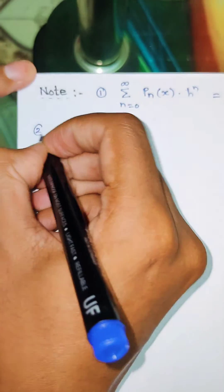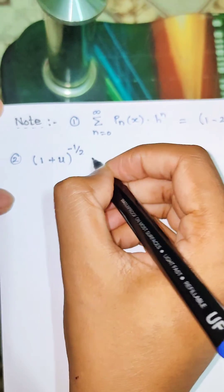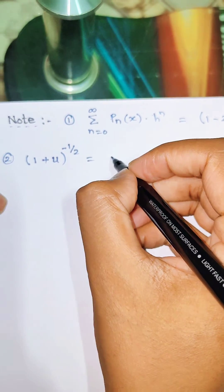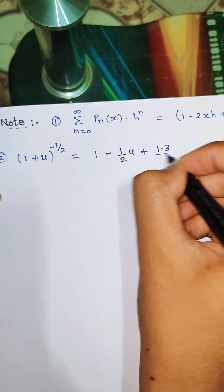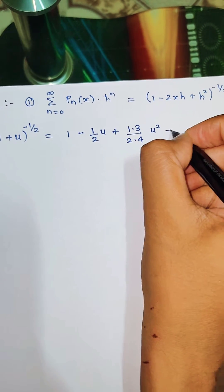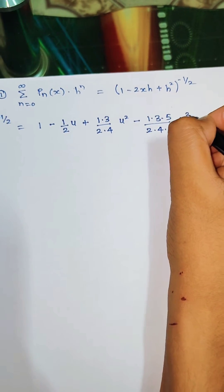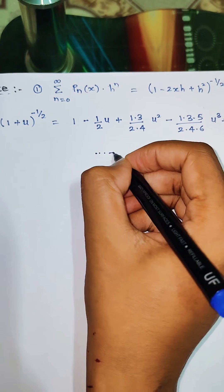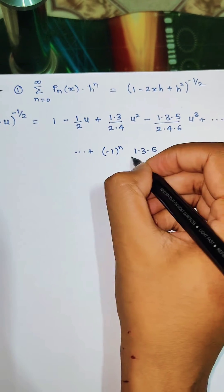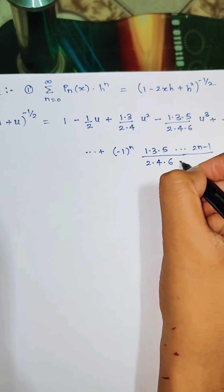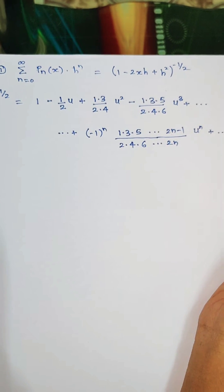The second result is about the binomial expansion of (1 minus u) or (1 plus u) to the power minus one-half. Using the binomial theorem, we can write: 1 minus (1/2)u plus (1·3)/(2·4) u² minus (1·3·5)/(2·4·6) u³ plus and so on, up to the general term: (−1)^n times (1·3·5···(2n−1)) divided by (2·4·6···2n) times u^n, and so on.